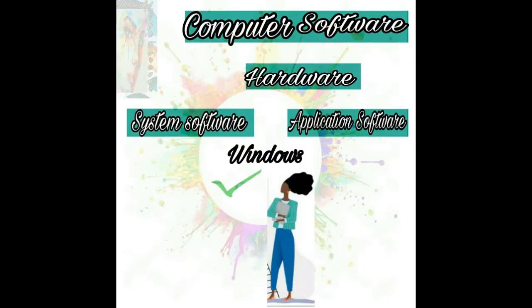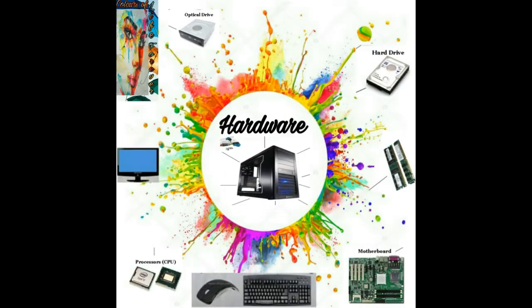The CPU type is hardware. Hardware includes mouse, keyboard, ROM, RAM, and motherboard. This is the whole hardware.